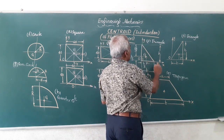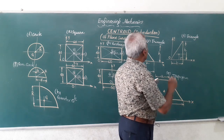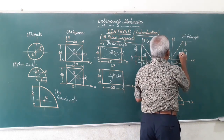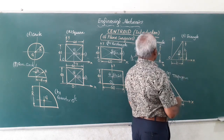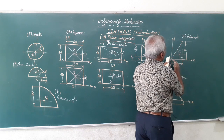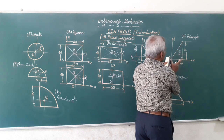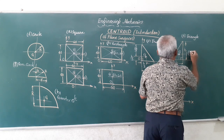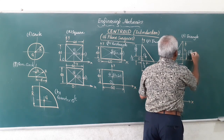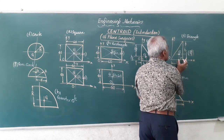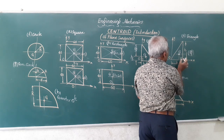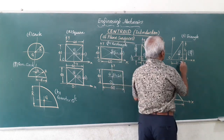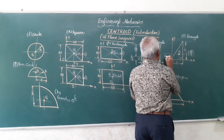So for a right angle triangle with the right angle at origin, the centroid appears very close to the 90-degree corner at coordinates X-bar = B by 3 and Y-bar = H by 3. For the same triangle in a different orientation, the distances are measured similarly: from the base it is one-third the height H by 3, and along the horizontal it is two-thirds, 2B by 3, from the opposite end.